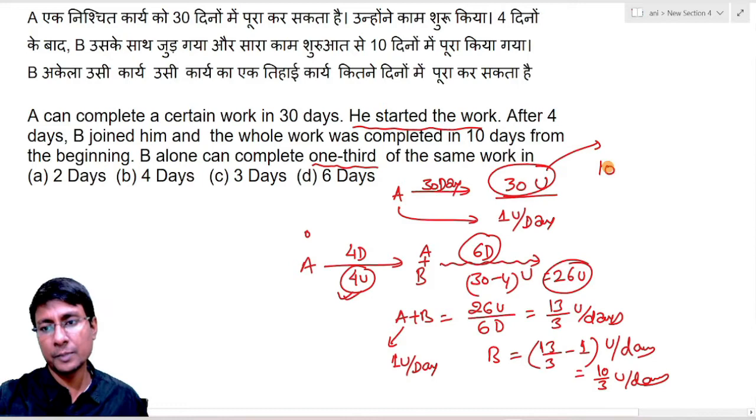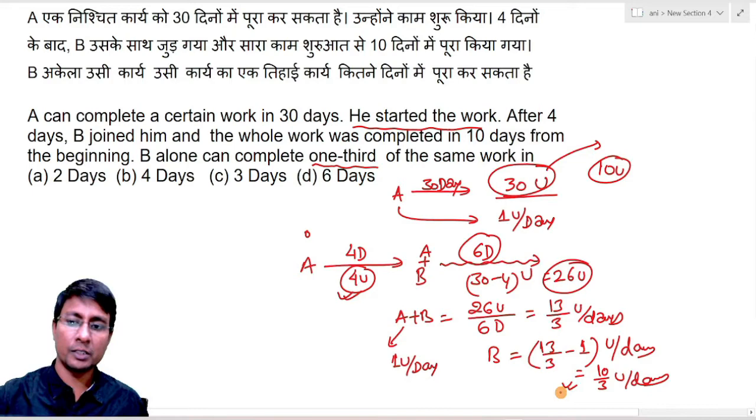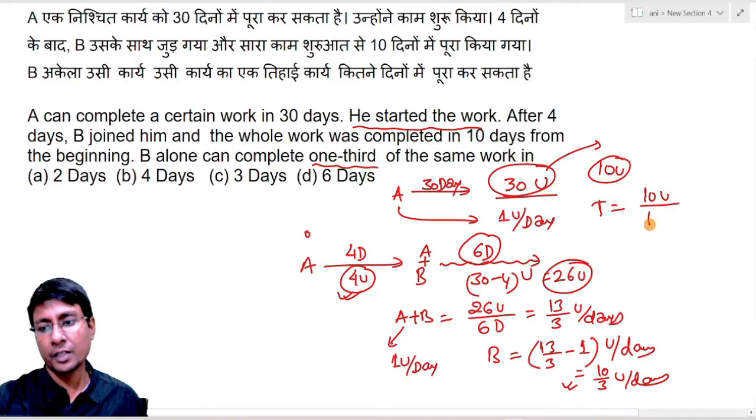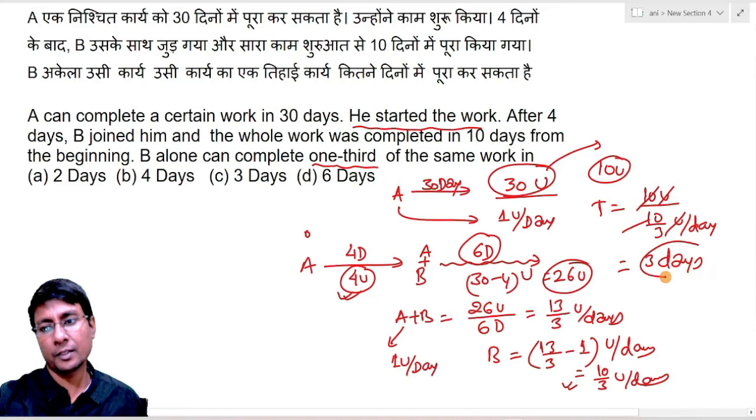B's efficiency is 10 by 3 units per day. Time equals 10 units divided by 10 by 3 units per day. Units cancel, 10 and 10 cancel. Ultimately we get 3 days. So our answer is option number C.